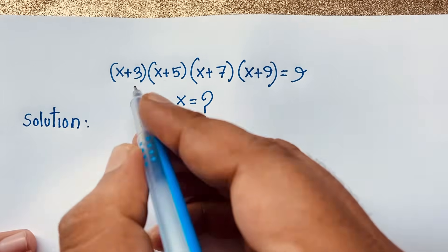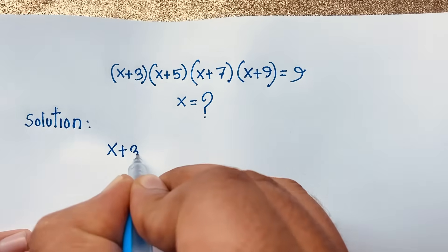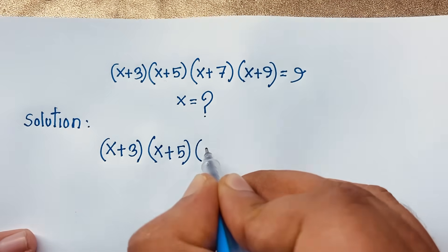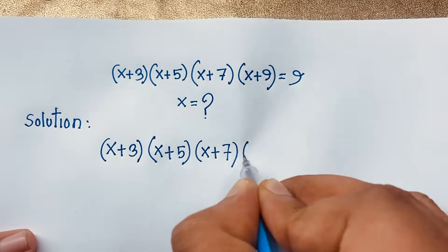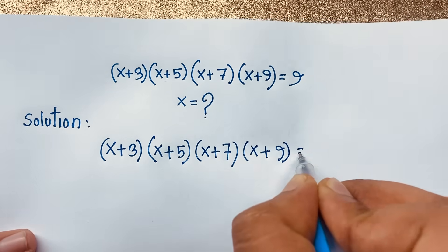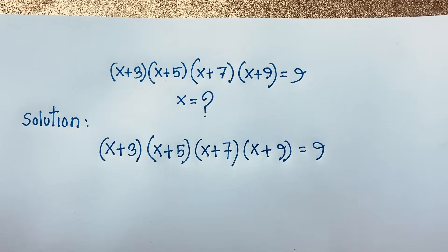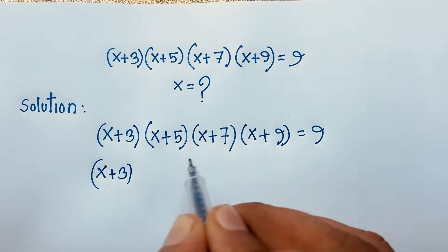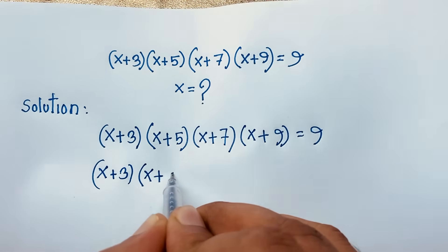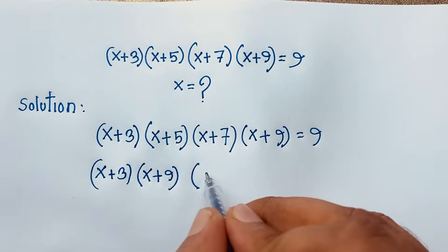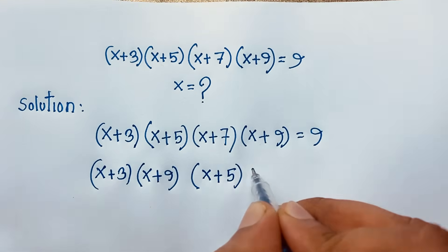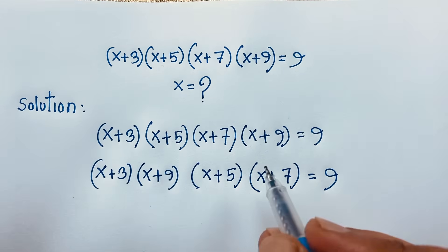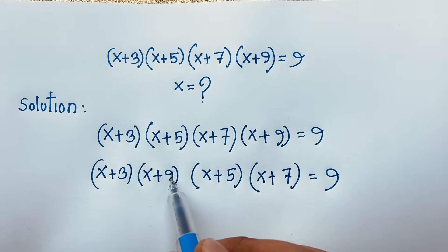Our question is (x+3)(x+5)(x+7)(x+9) = 9. Now at this moment, we rearrange and pair the factors: (x+3)(x+9) and (x+5)(x+7) = 9. Notice that 3+9 = 12 and 5+7 = 12, so both pairs have the same sum of 12.